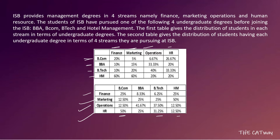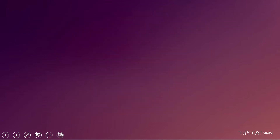Since every figure is given in terms of percentage, you can take the total value of any one field as 100x and solve accordingly. I am going to take BCom as 100x and build my table from there.